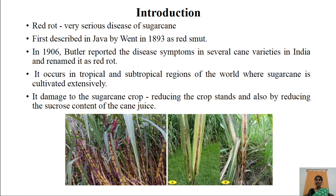This disease damages the sugarcane crop by reducing the crop stands and also by reducing the sucrose content of the cane juice. Here we can observe the sugarcane field where the crop is infected with red rot disease. We can see red color stripes or patches developed on the leaf surface and also in the stem region.